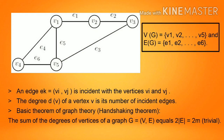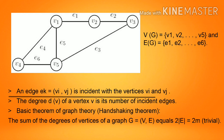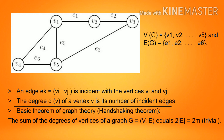In the given graph, V(G) equals {v1, v2, ..., v5} and E(G) equals {e1, e2, ..., e6}. An edge ek equal to (vi, vj) is incident with the vertices vi and vj. The degree d(v) of a vertex v is its number of incident edges.